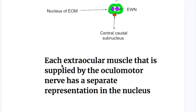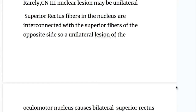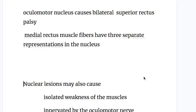The second important point is that each extraocular muscle supplied by the oculomotor nerve has a separate representation in the nucleus. Superior rectus fibers in the nucleus are interconnected with the superior rectus fibers of the opposite side, so a unilateral lesion of the oculomotor nucleus causes bilateral superior rectus palsy. Number three, the medial rectus muscle fibers have three separate representations in the nucleus.